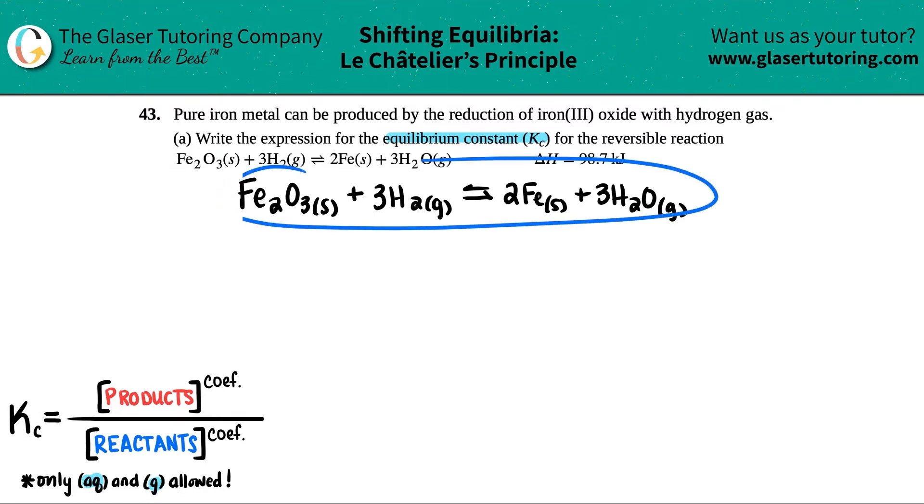So the first thing I'm going to do is check out what states I have. But uh-oh, the first state I see is a solid. And only aqueous and gases are allowed. Is this guy going to be in this formula? Yeah, you got it—absolutely not.